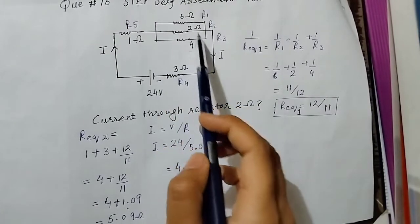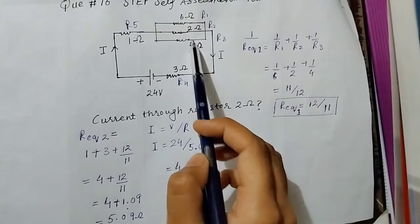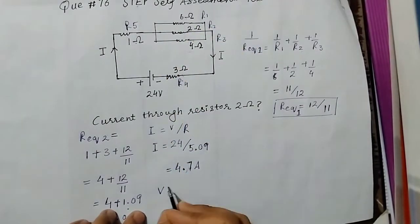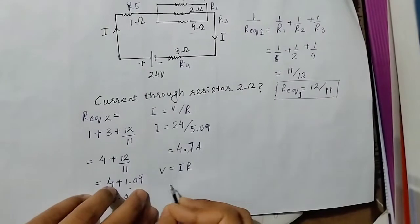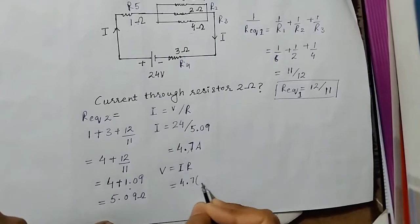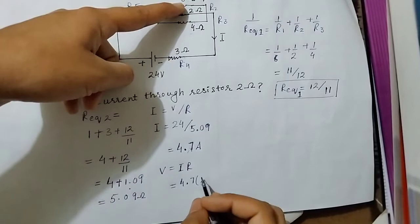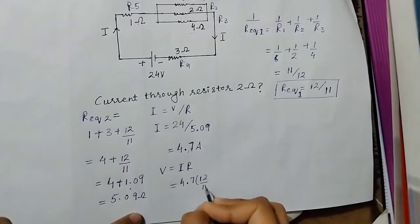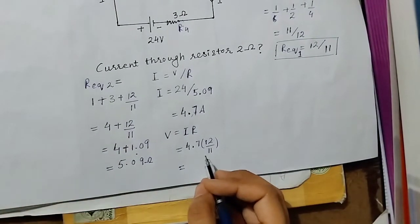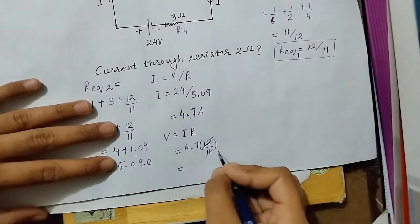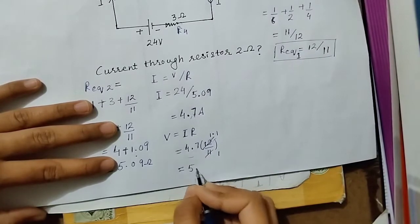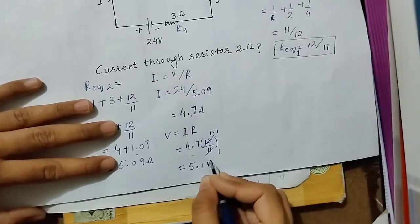V equals IR. Current is total current 4.7 and the resistance is 12/11 which we found. So if we solve it is something around 5.1 volts.